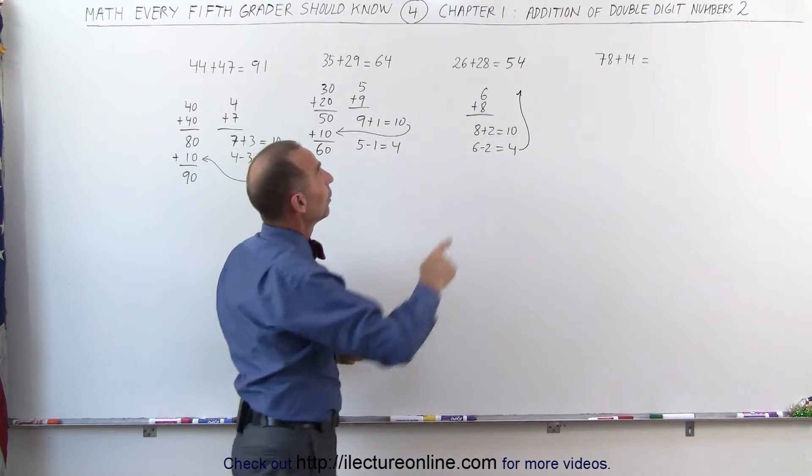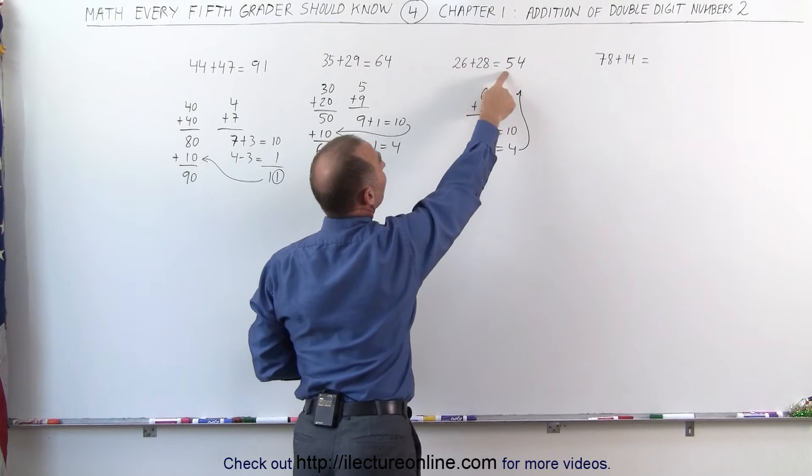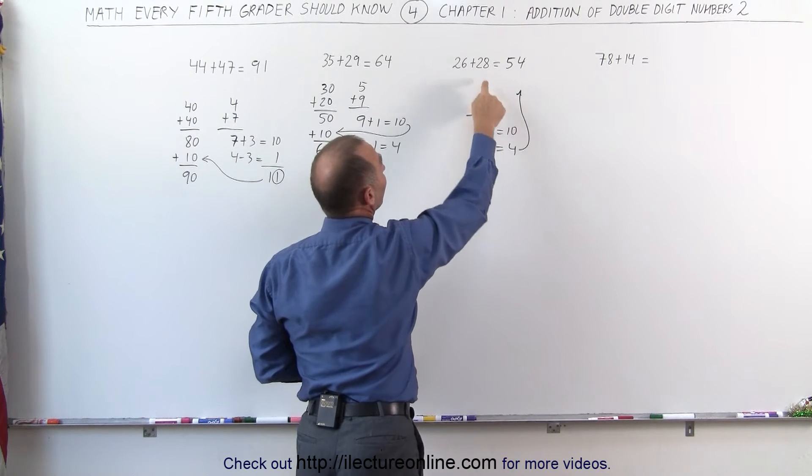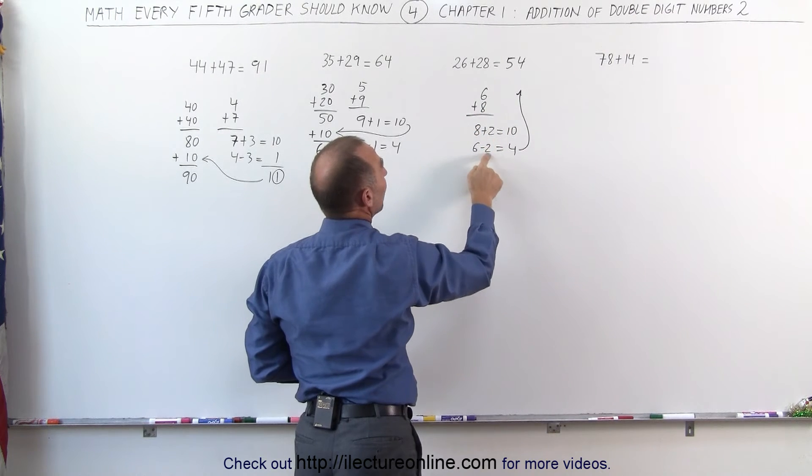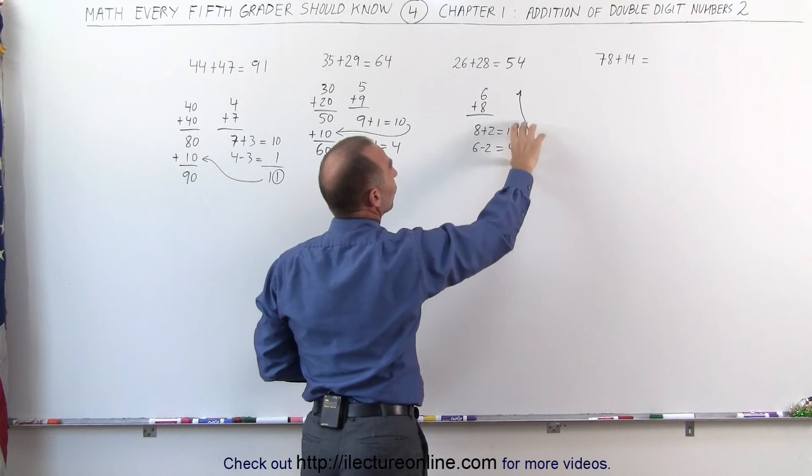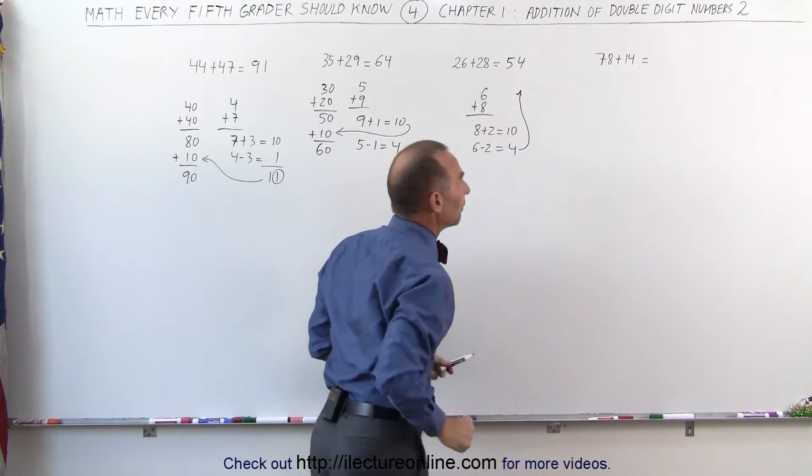Again, quickly: 20 plus 20 is 40, plus another 10 is 50. 6 plus 8, that gave me 2 more for an 8, that gives me 10. Subtract the 2 from 6 gives me 4. So instead of writing 14, I take the 4 and write it here.